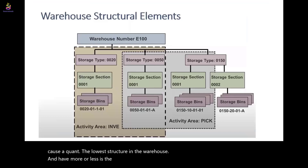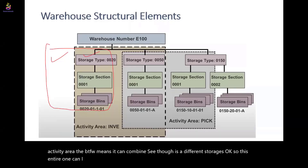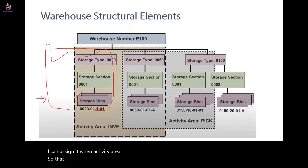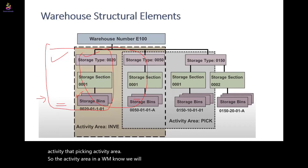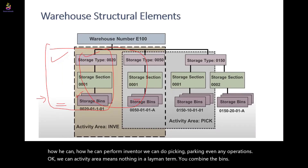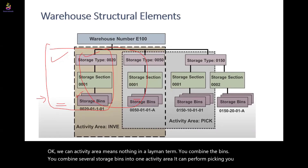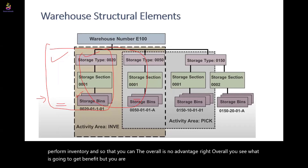More or less the structural elements are the same, with one more element — the activity area. The beauty of EWM is that you can combine different storage types and assign them to one activity area, so you can perform inventory across them. Similarly, you can assign other bins to a separate picking activity area. In EWM, activity areas are used extensively — in layman's terms, you combine several storage bins into one activity area to perform picking, inventory, and other operations, improving overall warehouse efficiency.